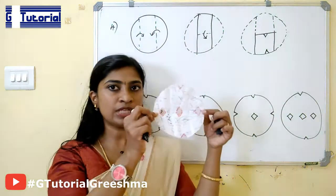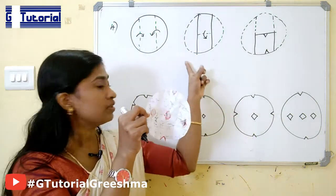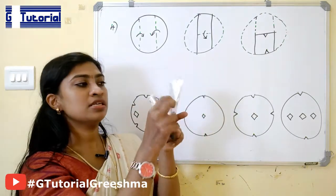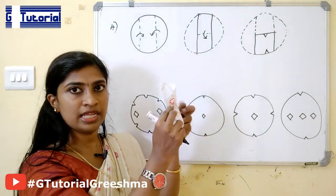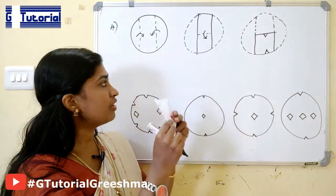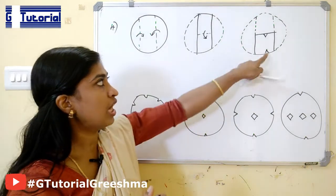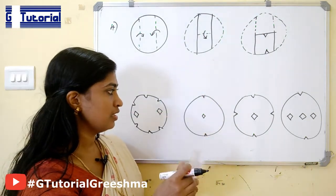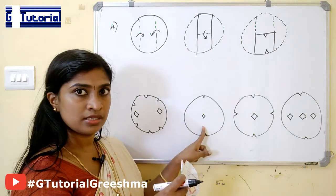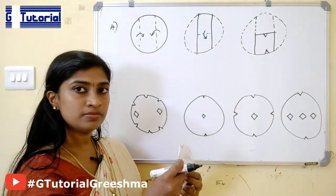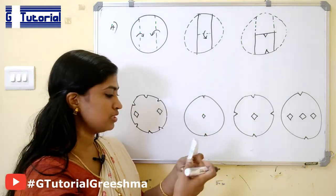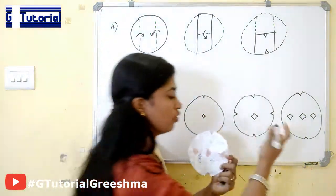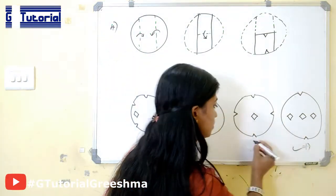Two types of questions can be asked from this circular portion. One is where the ends are touching each other — then after unfolding the figure will have the same diamond shape cut made here and here. But if the paper is not folded such that the entire region is touching, the pattern will be different — it will just be cut like this without the diamond shape. So these two diamonds will be present here also, and the answer is option D.